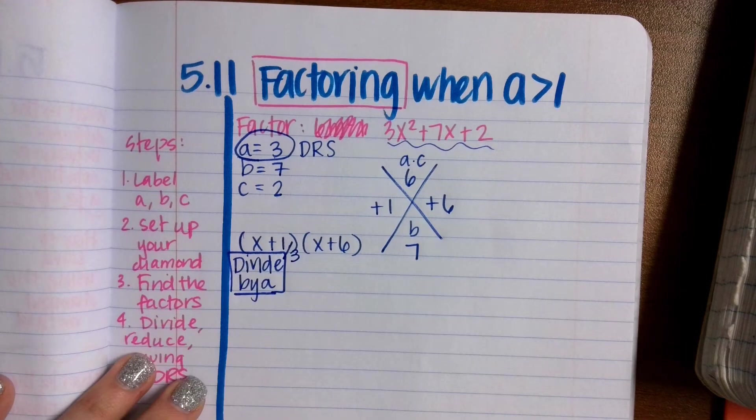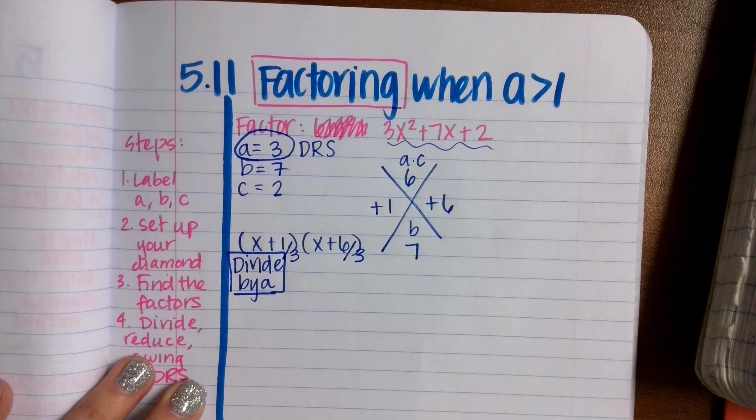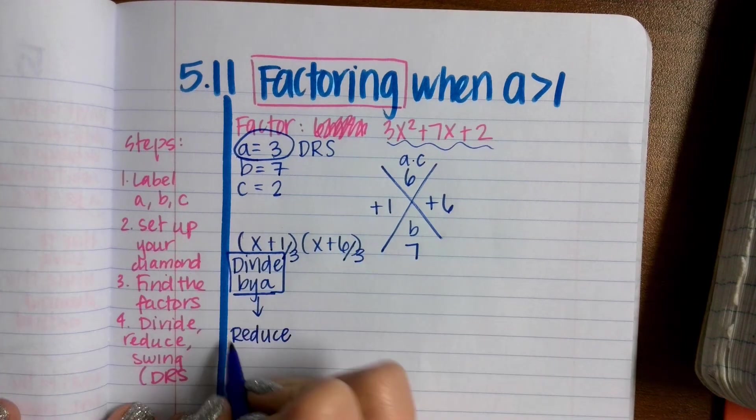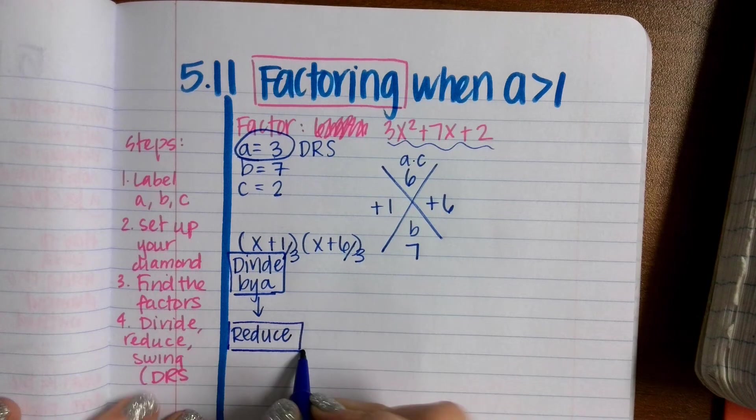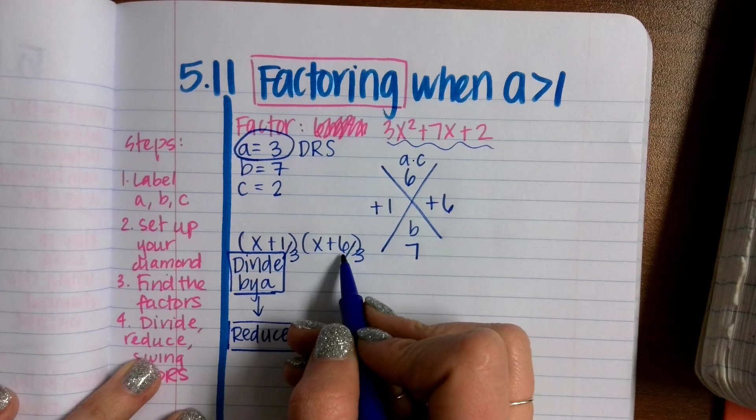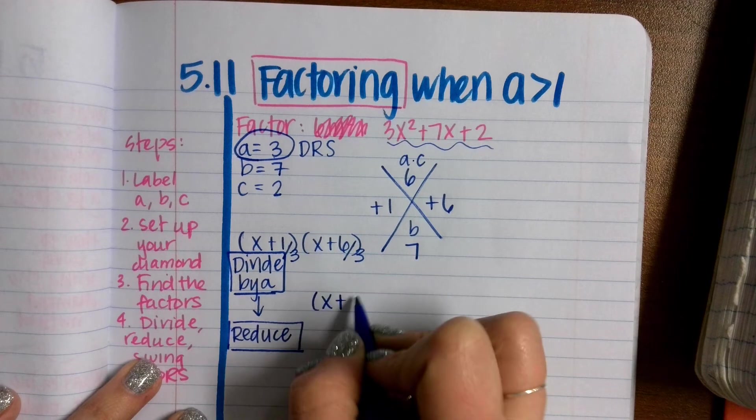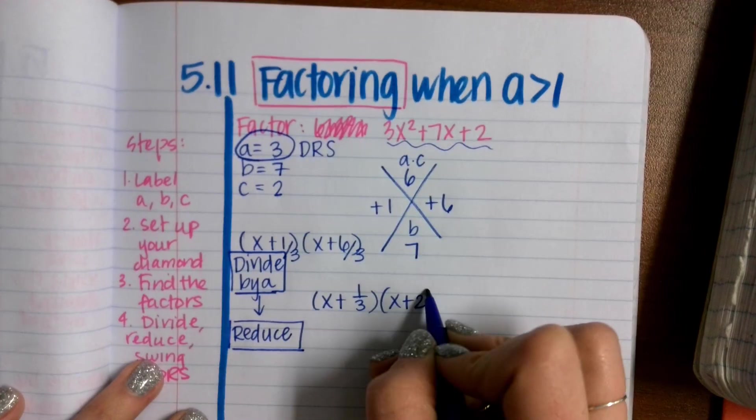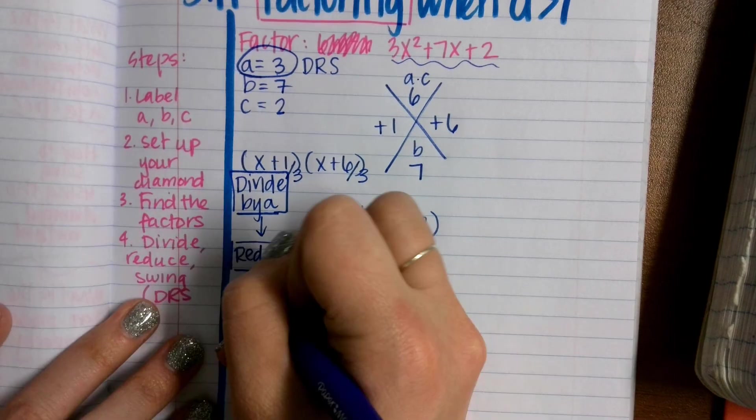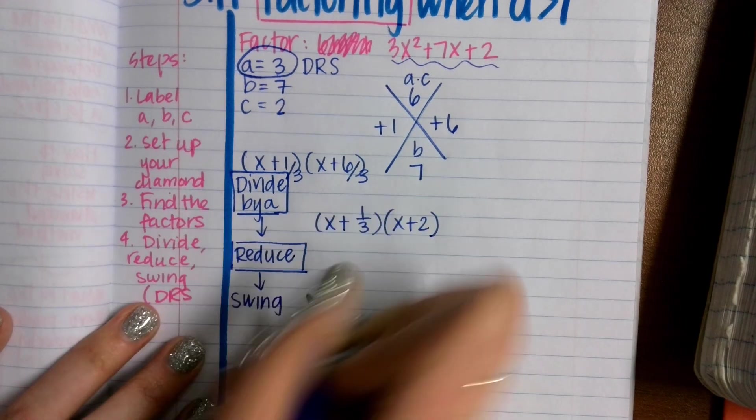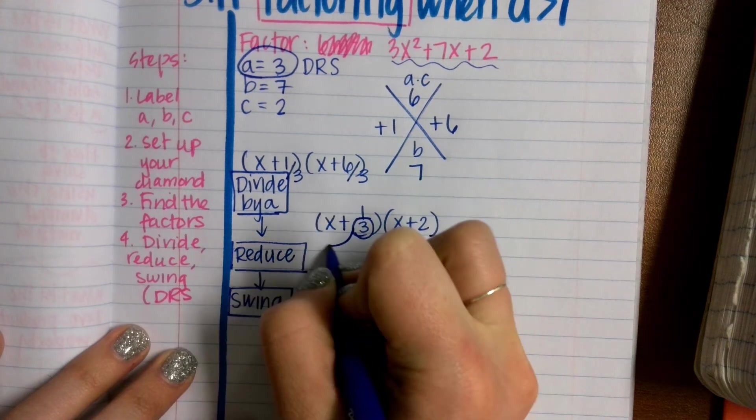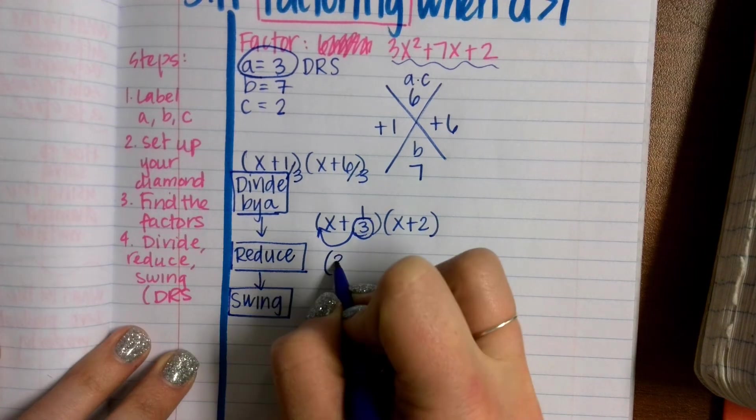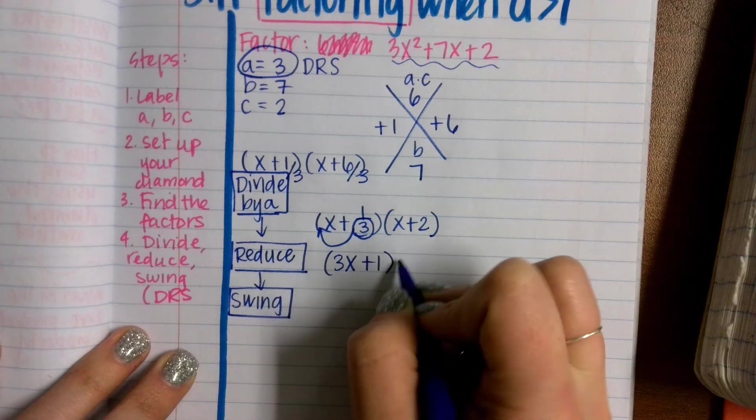The R stands for reduce. I can't reduce 1 over 3, but I can reduce 6 over 3. So then this is going to become x plus 1 third, x plus, what is 6 divided by 3? 2. And then S stands for swing. If there's anything still left in the denominator, you are going to swing that up to the front, and that will become my coefficient in front of my x. 3x plus 1, x plus 2.